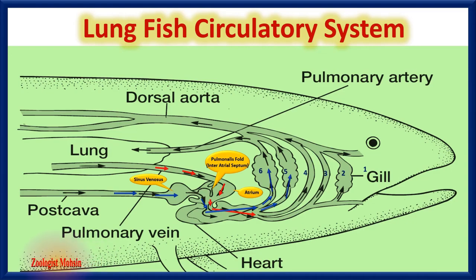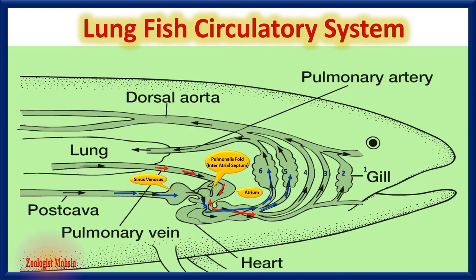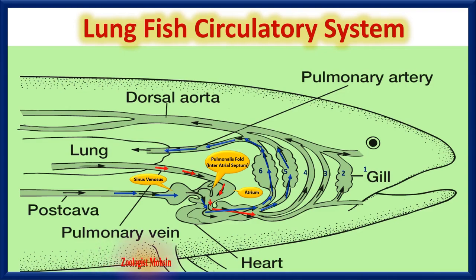There are two conditions. First, if the fish is respiring through gills, then this blood becomes oxygenated while passing through gills and is sent to the lungs, through which it just passes toward the atrium — no change occurs because the lungs are not supplied with air. Second, if the fish is respiring through lungs only, then this deoxygenated blood passes through the gills as-is and reaches the lungs where oxygenation occurs.